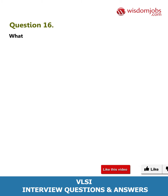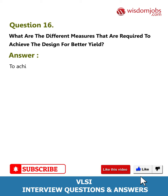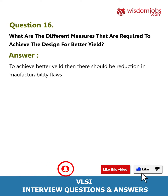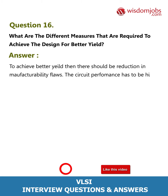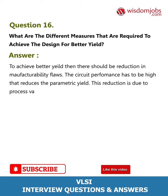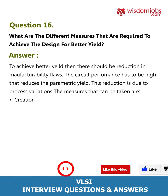Question 16: What are the different measures required to achieve the design for better yield? To achieve better yield, there should be a reduction in manufacturability flaws. The circuit performance has to be high, which reduces the parametric yield. This reduction is due to process variations.